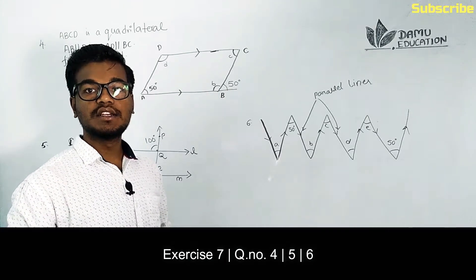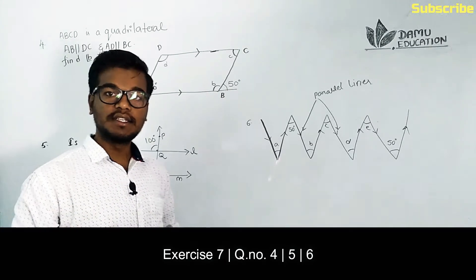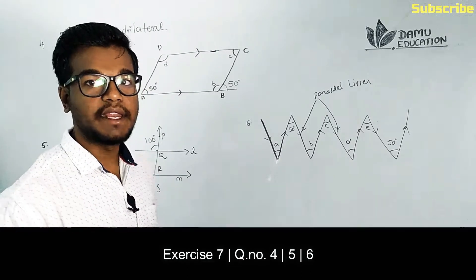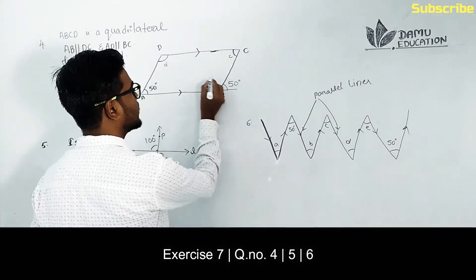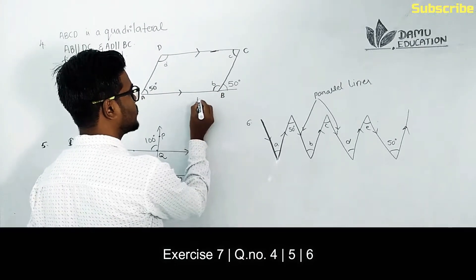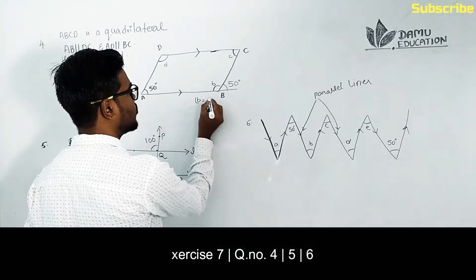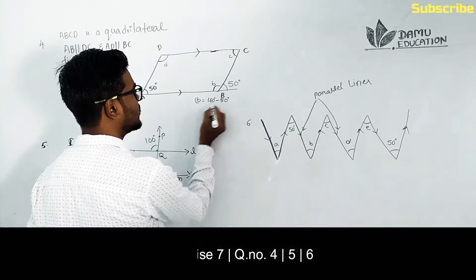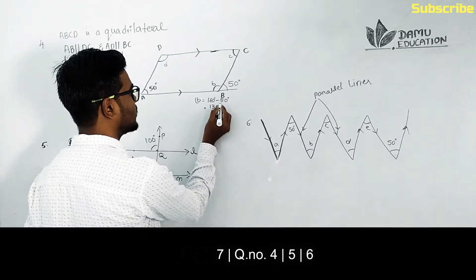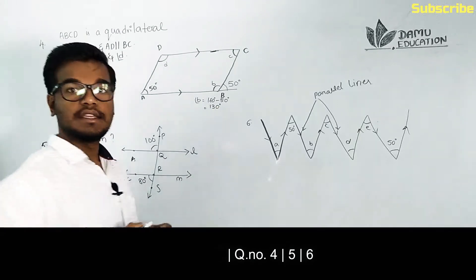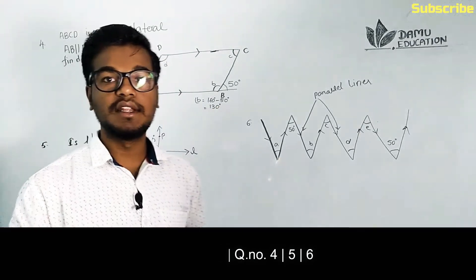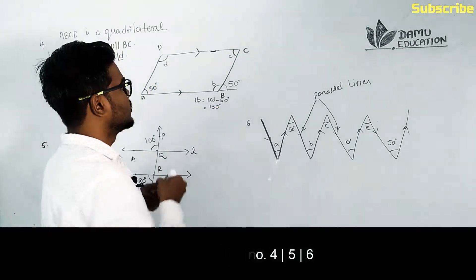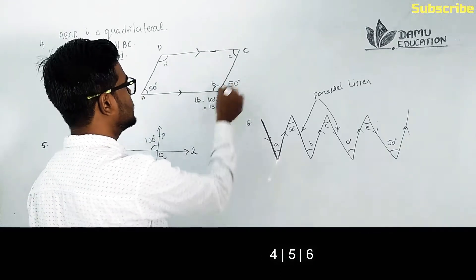From linear pair angles, angle B and 50 degrees are adjacent angles forming a linear pair. So angle B will be equal to 180 degrees minus 50 degrees, which equals 130 degrees.